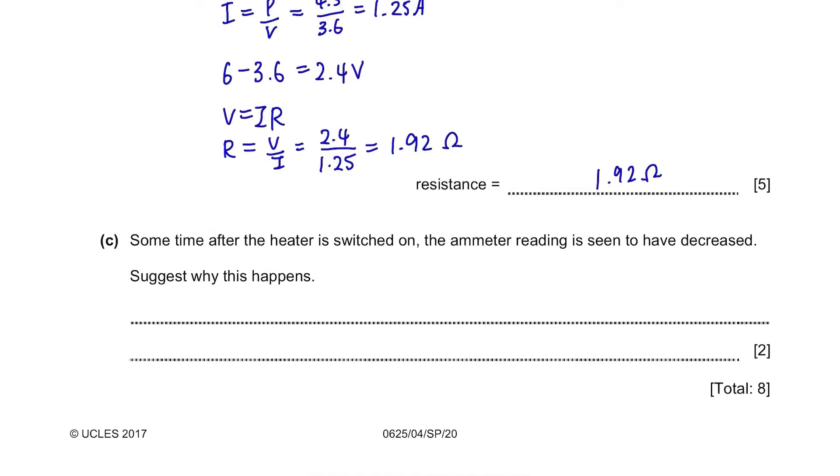Part C. Some time after the heater is switched on, the ammeter reading is seen to have decreased. Suggest why this happens. The answer is quite simple once you know it. After some time, the energy of battery will be used up.